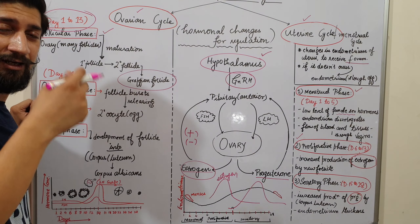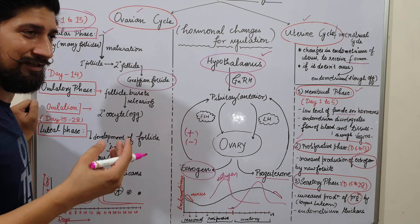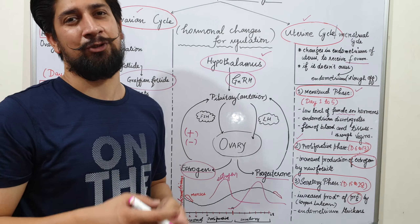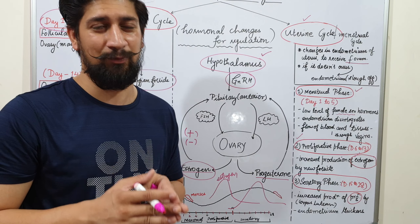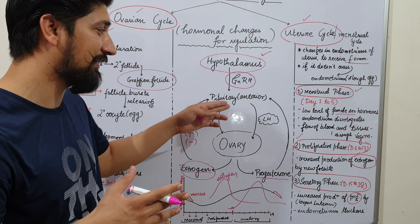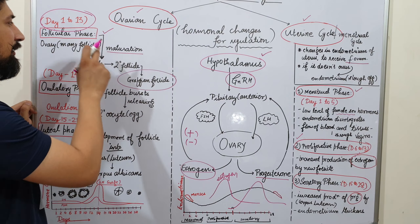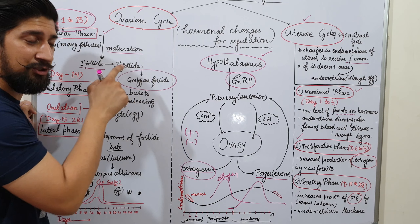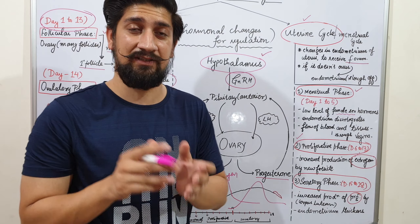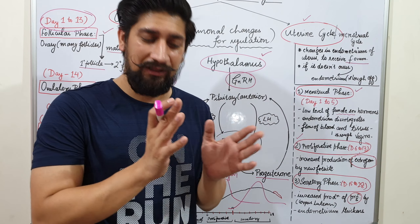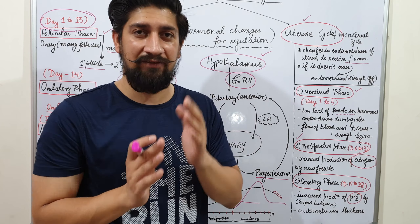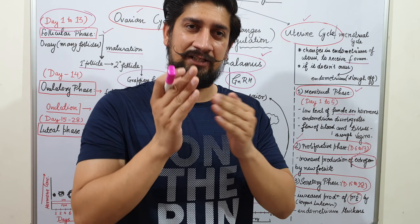In the follicular phase, immature follicles undergo maturation and development by the action of follicle stimulating hormone (FSH), secreted by the anterior region of the pituitary gland. The follicles develop first into primary follicles, then secondary follicles, and finally into mature Graafian follicles. This process lasts approximately 12 to 13 days, though it can vary based on lifestyle and diet.